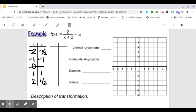Hello everyone, this is Mrs. Herbert and today I'm just going to take you through one more example of graphing a rational function and this one is going to have multiple transformations. So the function given is f of x equals 2 over x plus 2 plus 4.